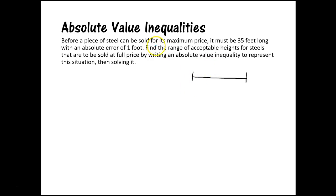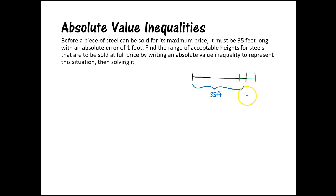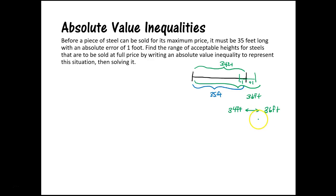We are told it must be 35 feet long, so that bar is 35 feet. However, it says with an absolute error of one foot — what that means is it can either be increased by one foot or decreased by one foot and we'd still be okay to sell this product. So if I increase it by one foot that makes it 36 feet, and if I subtract one from 35 feet that makes it 34 feet. The bar could be anywhere between 34 feet and 36 feet and we'd still be able to sell it for full price.